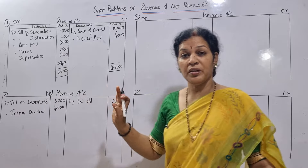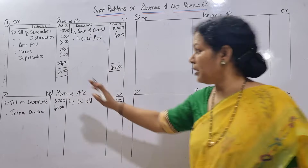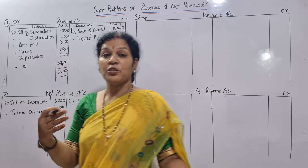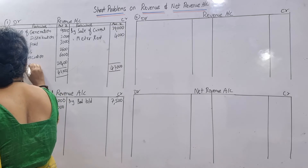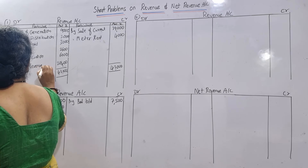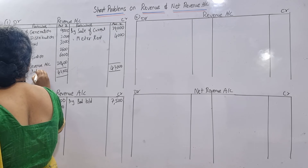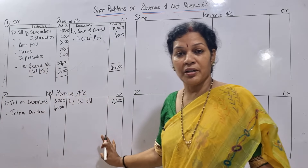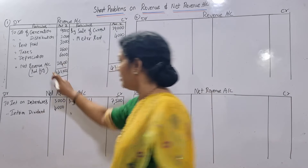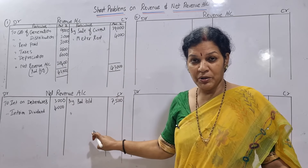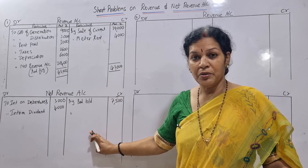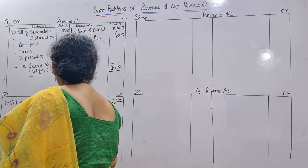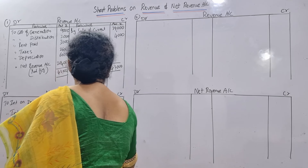So we get 20,400. This will be transferred to the net revenue account. On the revenue account, write 'to net revenue account' or 'transfer to net revenue account' as the balancing figure - 20,400. On the net revenue account credit side, you will write 'by revenue account' 20,400, since that amount is coming from the revenue account.